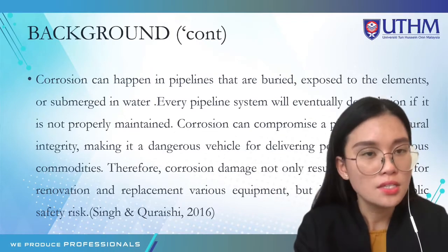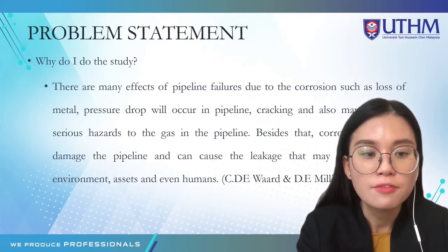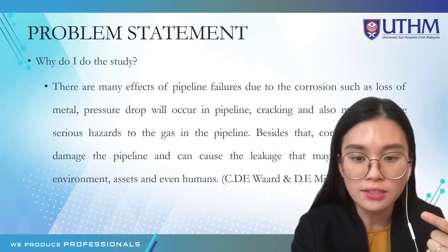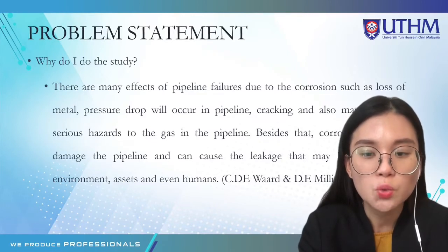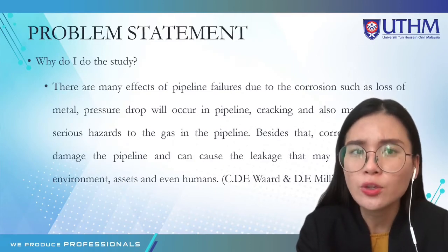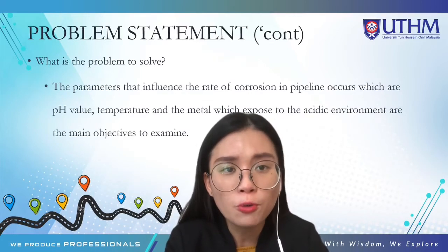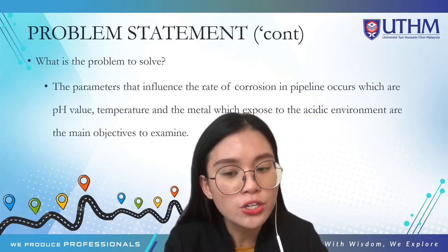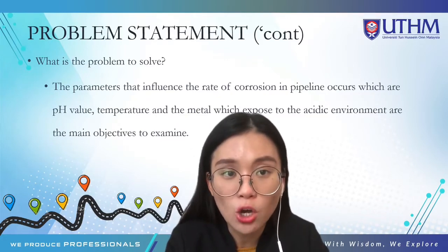Therefore, corrosion damage not only results in high costs for renovation and replacement but also poses public safety risks. From the problem statement, this is why I chose this topic as my research study. There are many effects of pipeline failure due to corrosion, such as loss of metal, pressure drop in the pipeline, cracking, and serious hazards to gas in the pipeline. The parameters that influence the rate of corrosion in pipelines — pH value, temperature, and metal exposure to the acidic environment — are the main factors to observe.